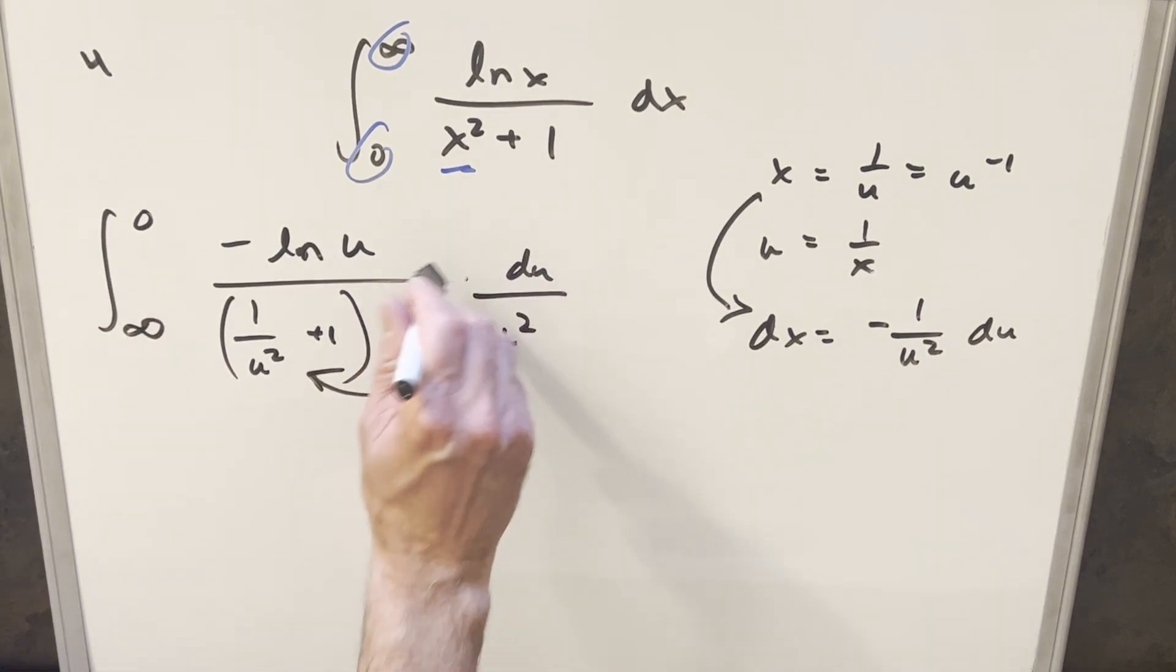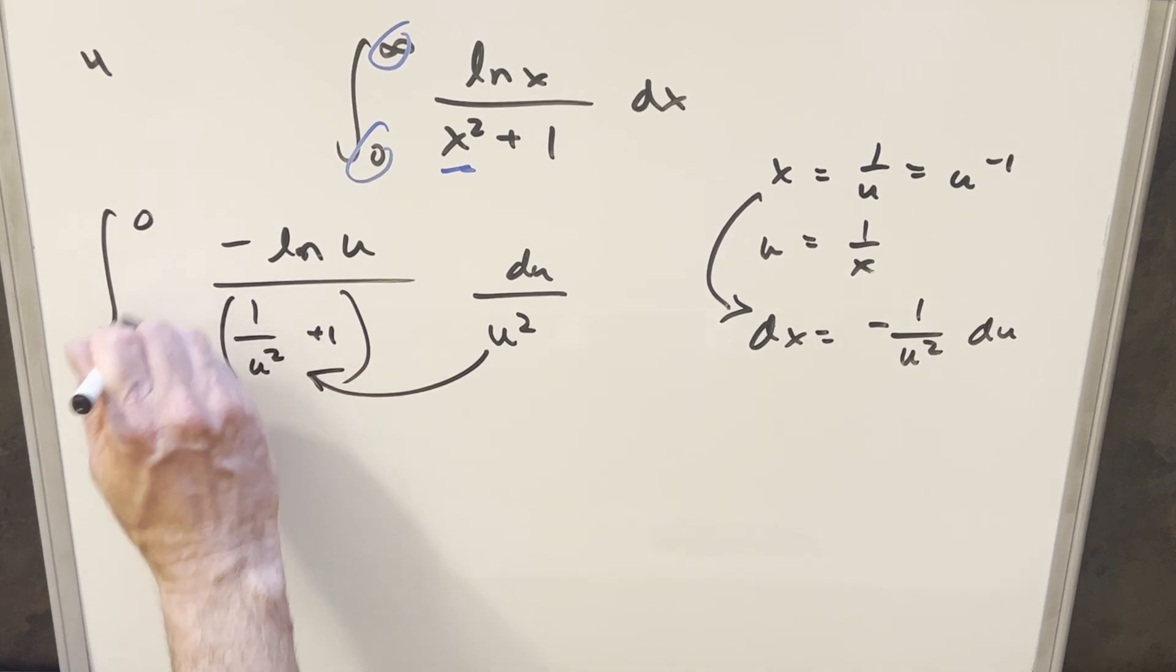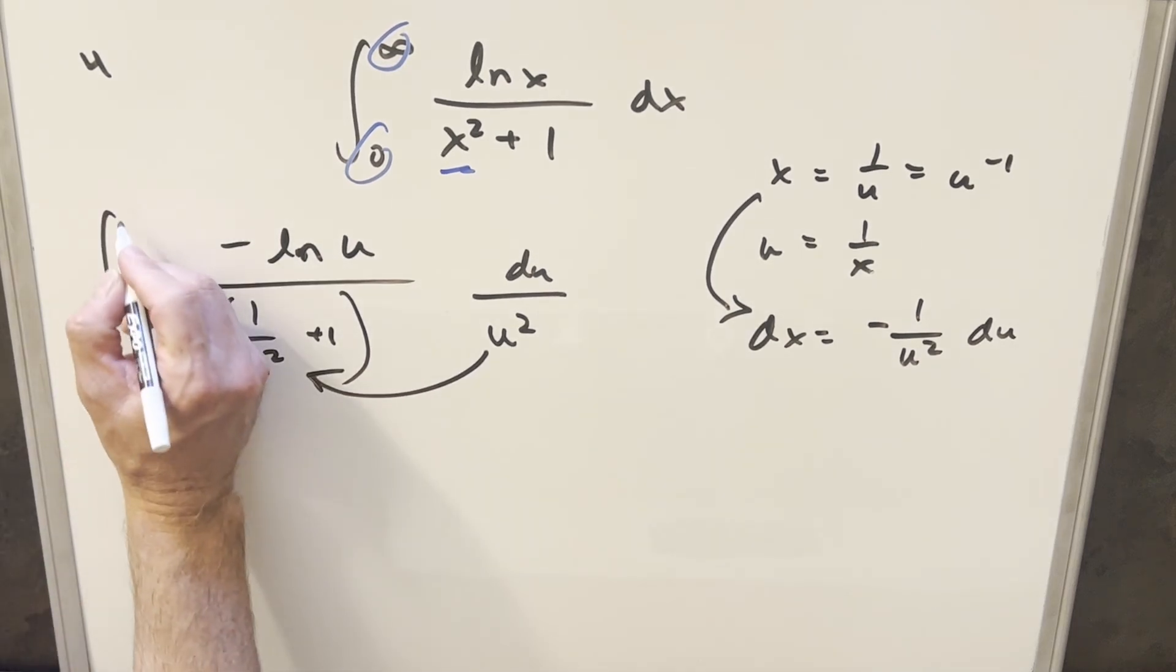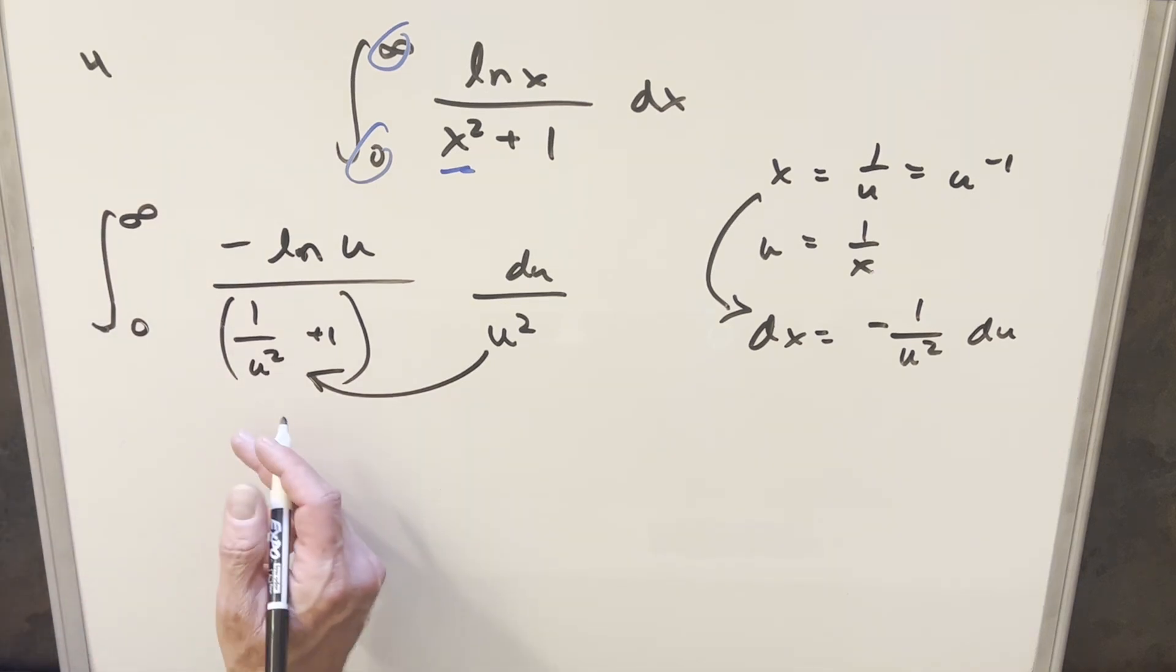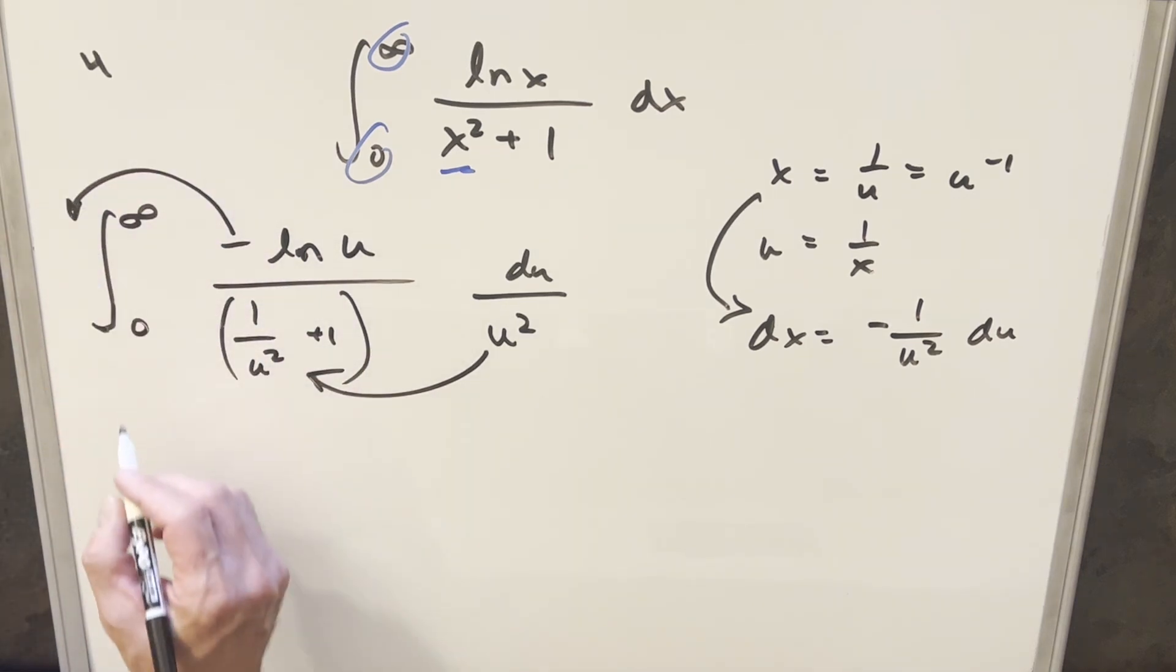But before we do that, let's use this minus sign and just use it to swap the bounds just so I can get the larger value up top. So we'll be going from zero to infinity again. And then let's multiply this in and do the rewrite. But first, when I do this, I'm going to bring the minus sign out front. We'll have minus sign up front, zero to infinity, natural log u.